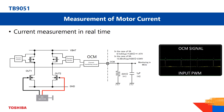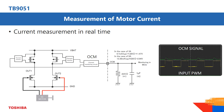In this oscilloscope video, you can see the increasing input PWM waveform on the bottom side of the screen, and above that the OCM monitor voltage at the 220 ohm resistance, which represents the motor coil current in real time.